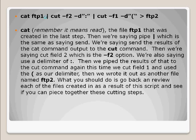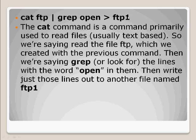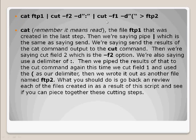Next, we cat the FTP1 file and pipe it to cut. We're cutting field 2 using a colon as the delimiter. Then we pipe those results to cut again, this time cutting field 1 with a left-facing parenthesis as the delimiter. We write all of those results out to another file named FTP2. At the end of this process we should have a file named FTP2 that contains just IP addresses — one IP address per line.